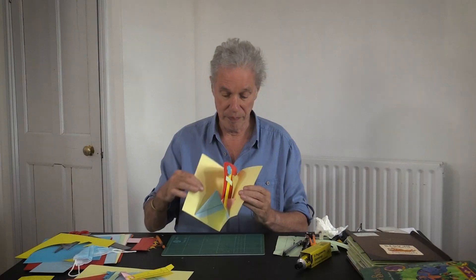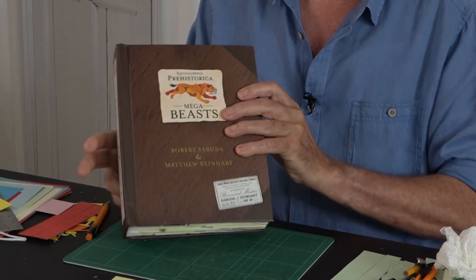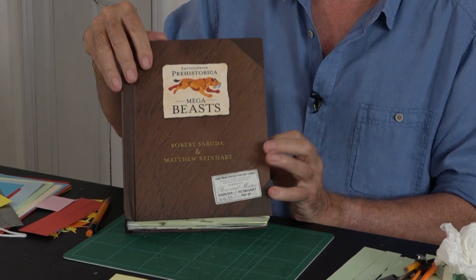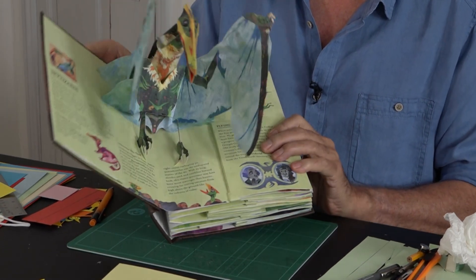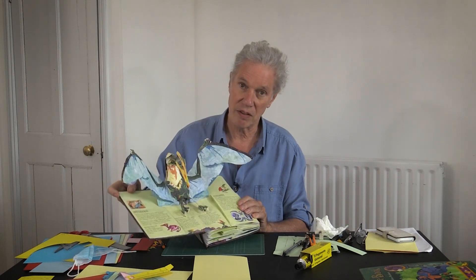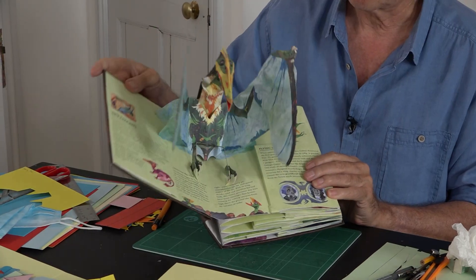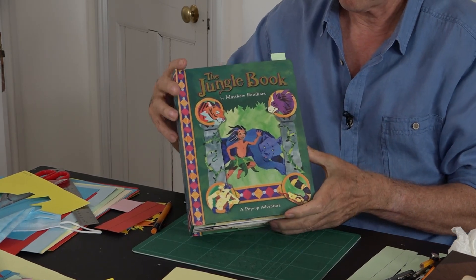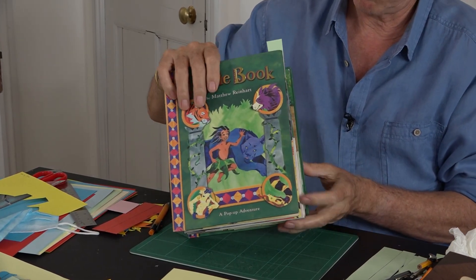I can show you in books. So this one is Mega Beasts by Robert Sabuda and Matthew Reinhart. It's the first spread. What I'm showing you is how these wing mechanisms work.